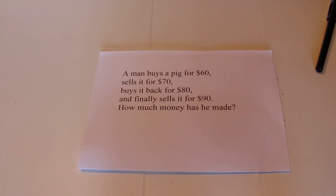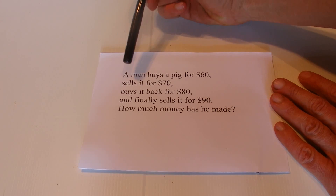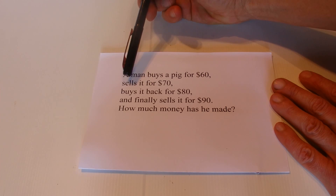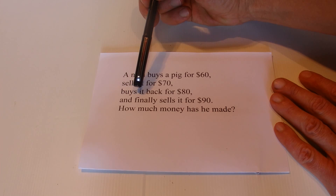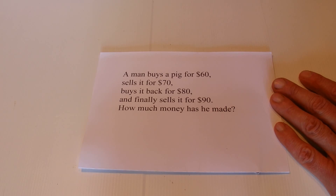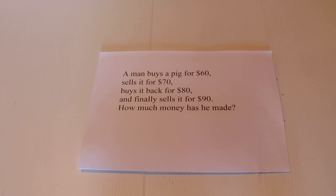Today I'm going to go through one of these cognitive reflection questions with you. They're great questions because the most obvious answer is not correct. A man buys a pig for $60 and sells it for $70. A little while later he buys the same pig back for $80, and finally sells it for $90. The question is: how much money has he made from the sale of that pig?